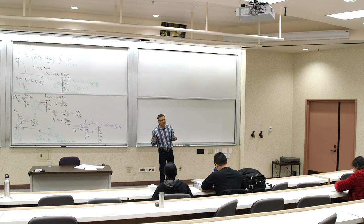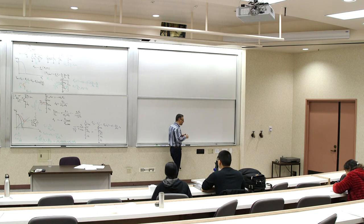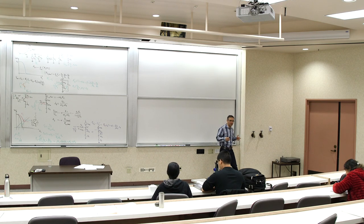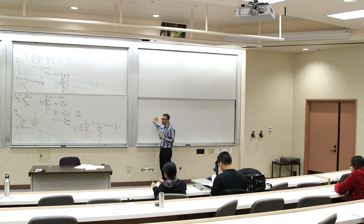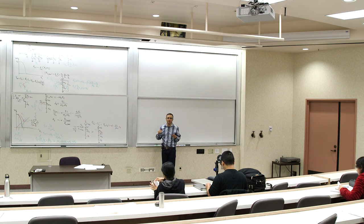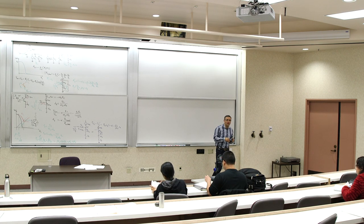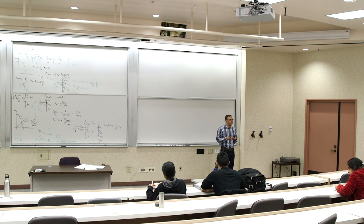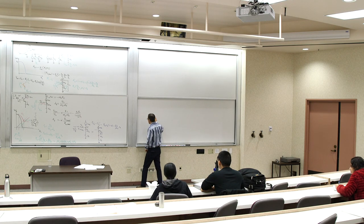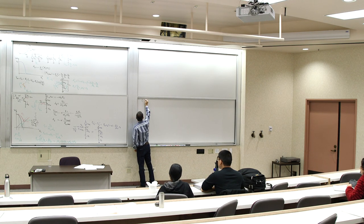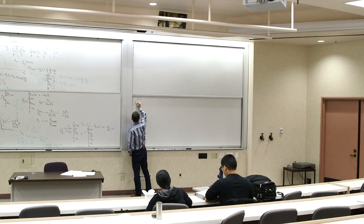Before the break we covered the common emitter stage in more detail, especially when we saw what happens when you have resistances in the emitter. That's one stage which has an input at the base and the output taken from the collector. Now, you can think about taking the output from other places or applying your input to other places. The transistor has three terminals, so there are different topologies. The next one we'll talk about is the common collector, also known as the emitter follower.